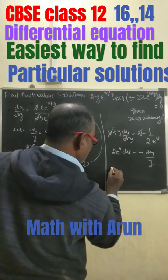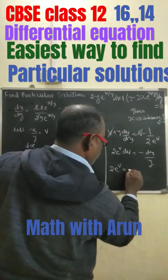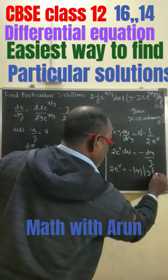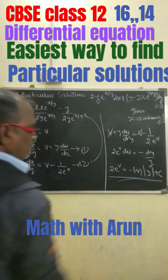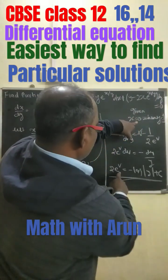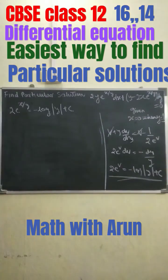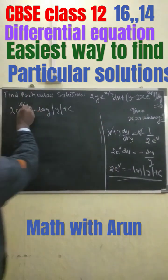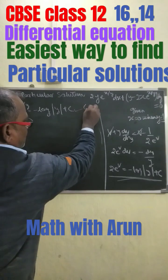Integrating both sides, this equals 2^v divided by ln 2 equals minus log y plus c. This is the general equation. Now putting v equals x/y back in place of v, this becomes the general solution.